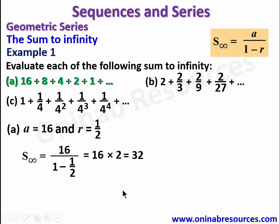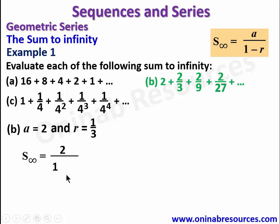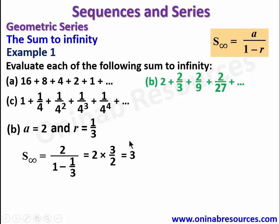For example 1b, our first term is 2 and the common ratio is (2/3) divided by 2, which gives 1/3. So the sum to infinity will be 2 over (1 - 1/3). Since 1 - 1/3 = 2/3, we have 2 divided by 2/3, which is 2 times 3/2. Since this 2 cancels with this 2, we get 3. That is the sum to infinity for example 1b.